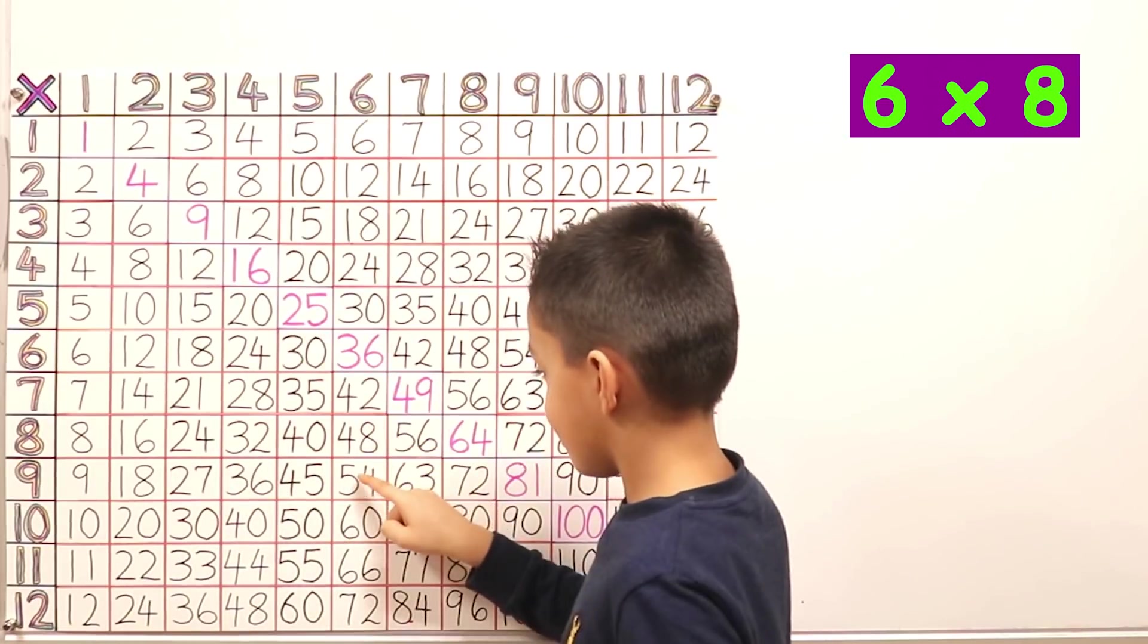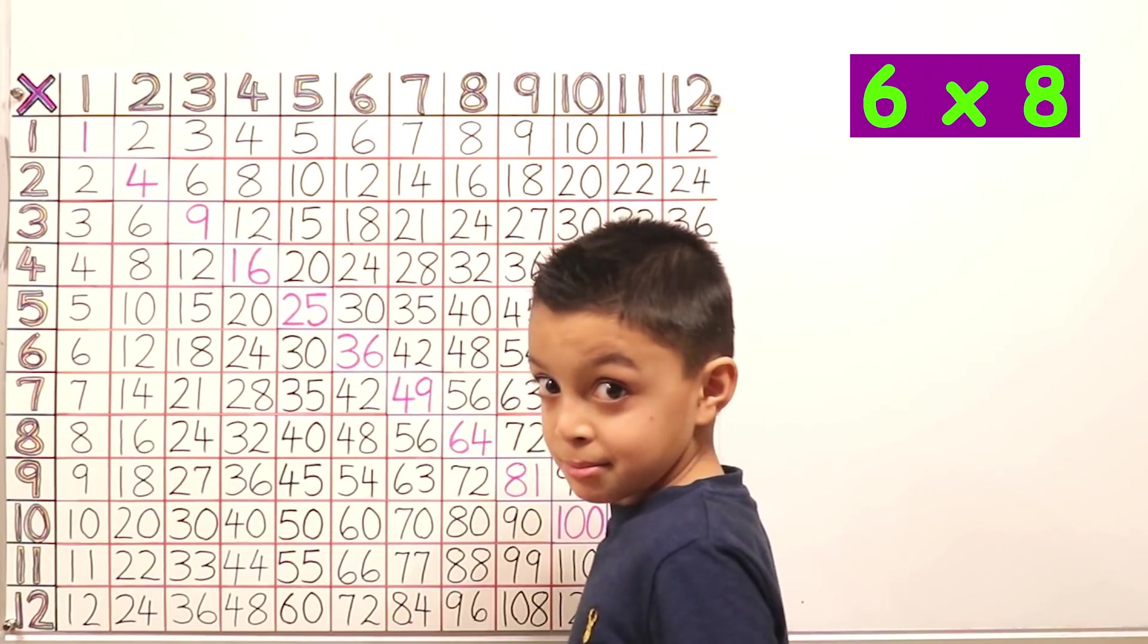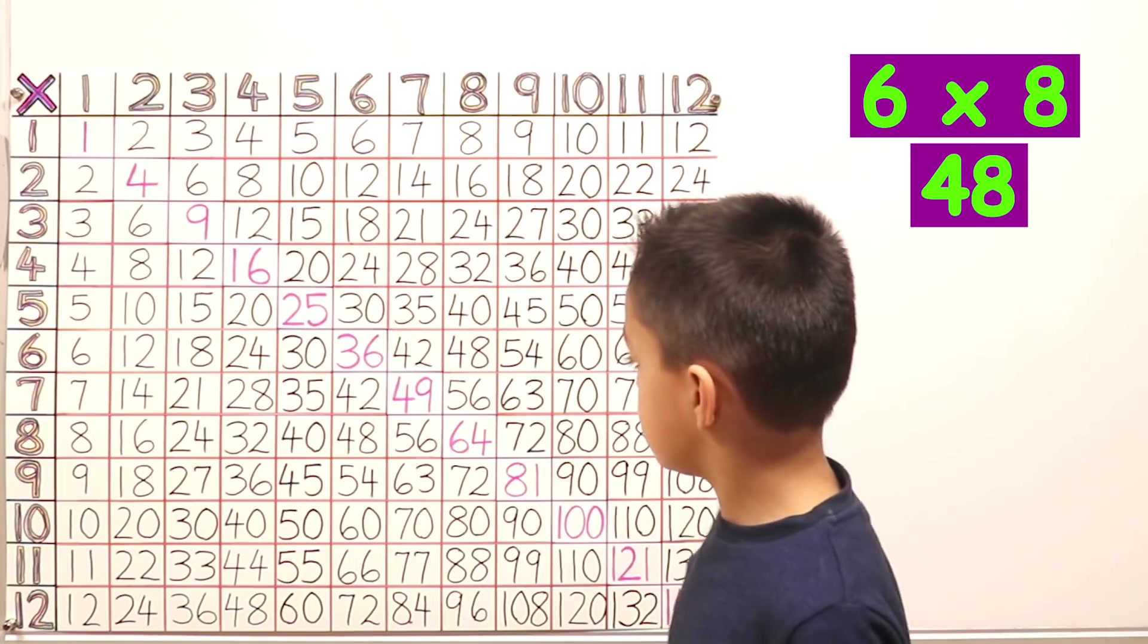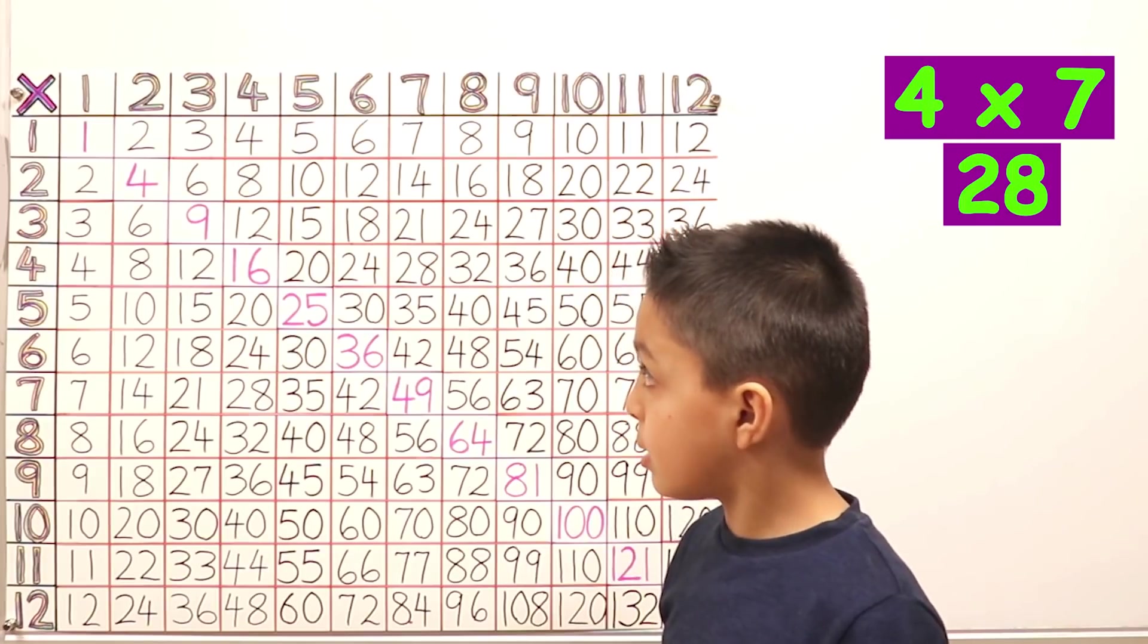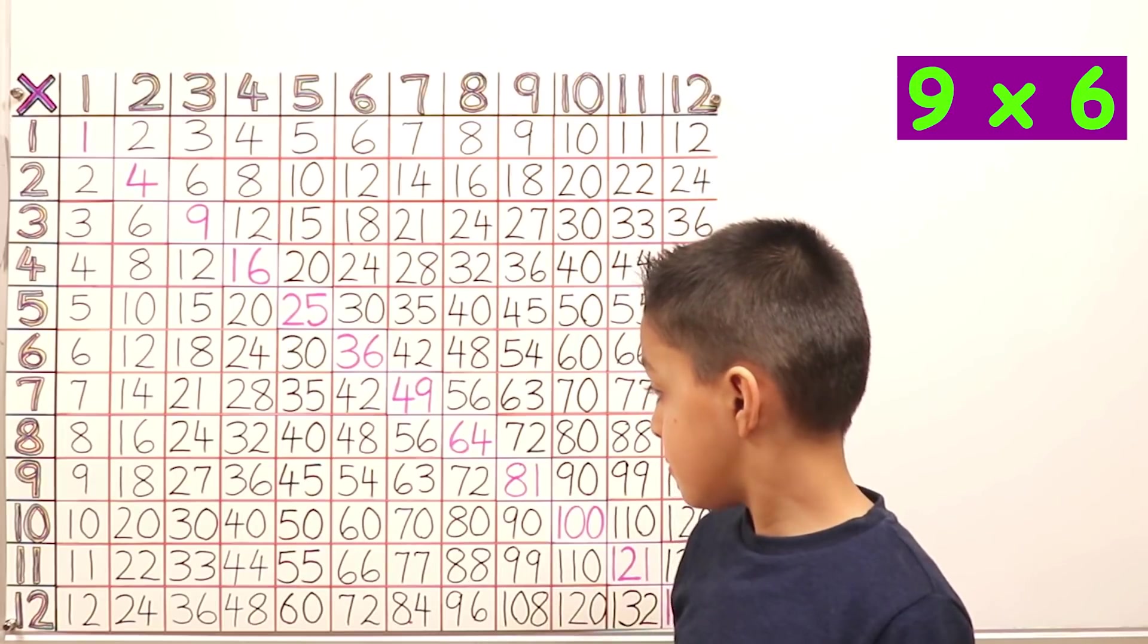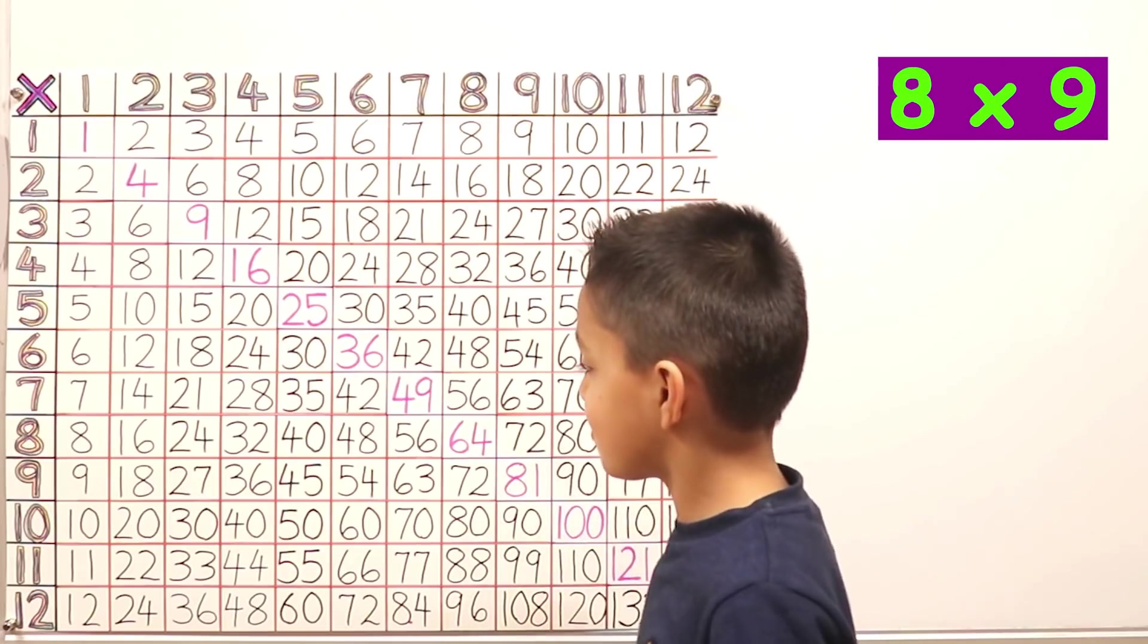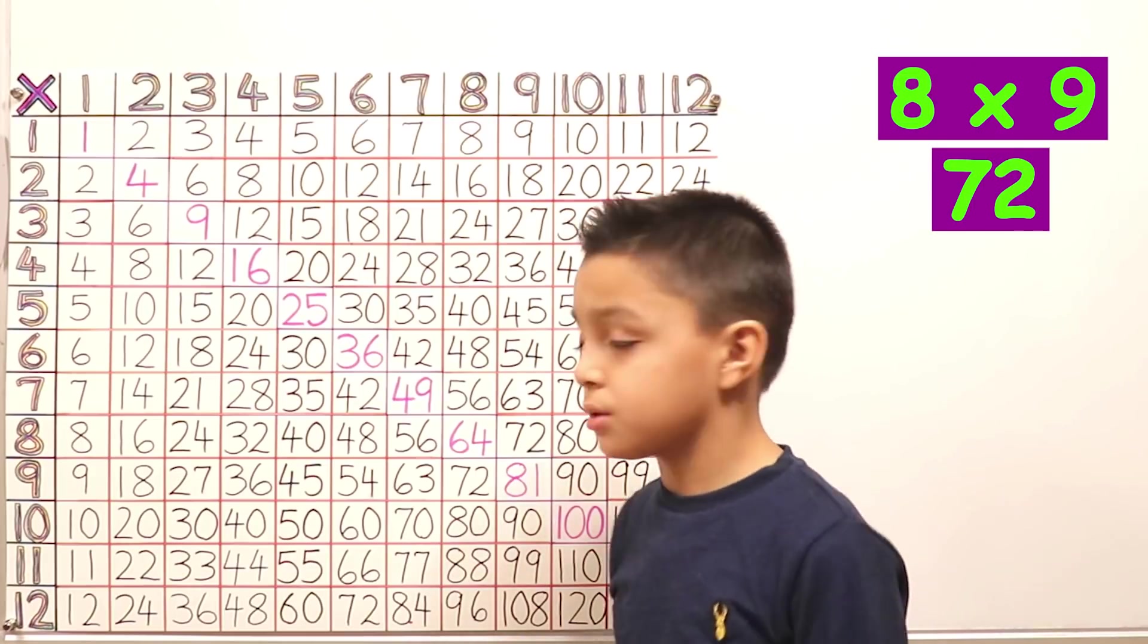So let's start with six times eight. Let me see though. Forty-fifty-six. No. What? How? Six times eight. Take your time. Forty-eight. Six times eight is forty-eight. Four times seven. Twenty-eight. Nine times six. Fifty-four. Very good, Maya. Yes. Eight times nine. Seventy-two. Very good.